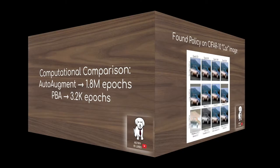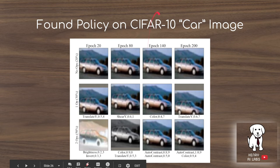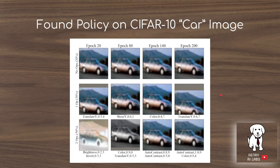The policy that PBA finds on the CIFAR-10 car image shows increasingly aggressive augmentation over training — for example, translating at epoch 20, then 80, 140, and 200. Because population-based training learns a schedule rather than a fixed policy, they test taking just the final policy and applying it throughout training, finding that the learned schedule performs much better. They also test randomly shuffling the schedule order, which also performs poorly — confirming the schedule is meaningfully learned during training.